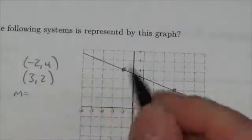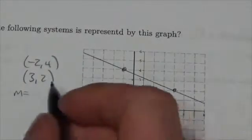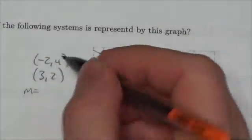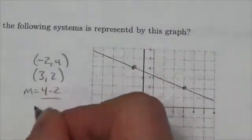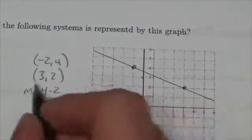So we need the slope. The slope of that line is rise over run, so it's the difference in the y-coordinates. So 4 minus 2 over negative 2 minus 3, and that's going to be, what is that, negative...